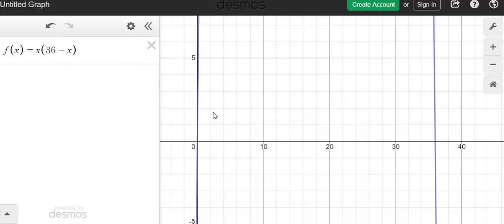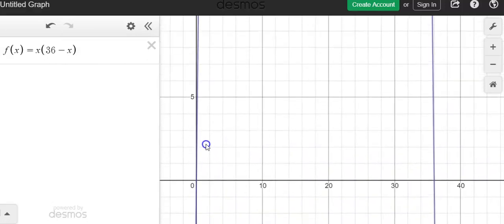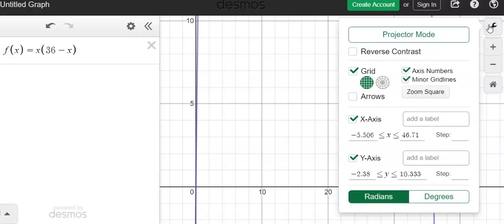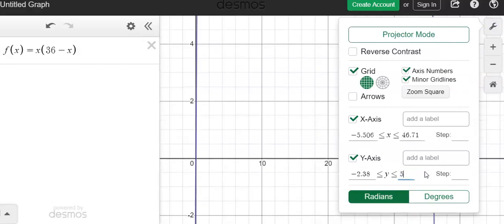The problem is I can't see the top of my graph. I know that this parabola is going to curve up and then come back down. So I'm going to go back to my settings, and I want to make this number larger. So if I make it 50, I can't see the maximum, so I'll make it higher.